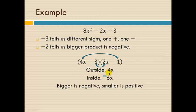That came from the inside, so we need to have a negative 3 and a positive 1. We've now found our factors.